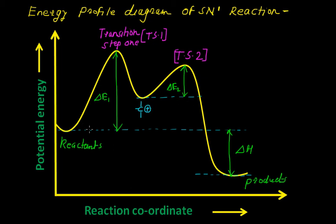Now here you can see this is the energy difference between the reactants and the products, and this energy difference is known as the heat of reaction, or delta H. So we have two transition states in this energy profile diagram, and this gives evidence that the rate of this reaction depends only upon tertiary butyl bromide and not the alkali.